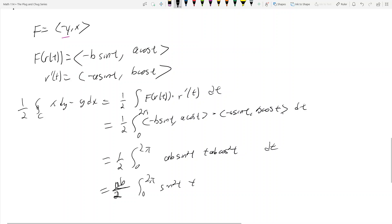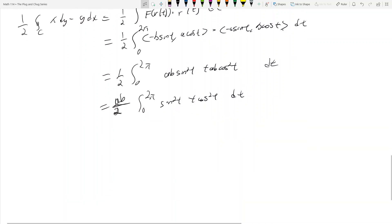Factor out ab and this becomes the integral from 0 to 2π of sin²t + cos²t dt. We know what sin²t + cos²t is, that's just 1, so it's ab/2 from 0 to 2π of 1 dt.